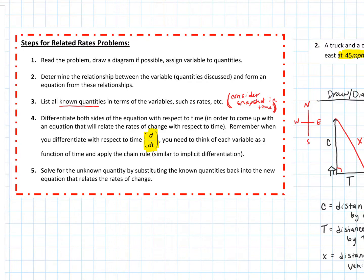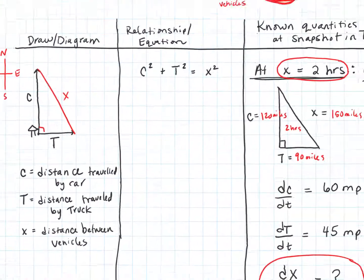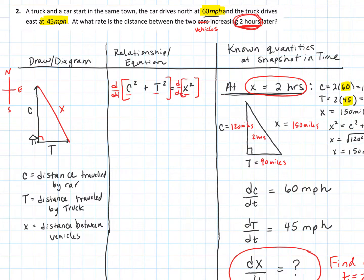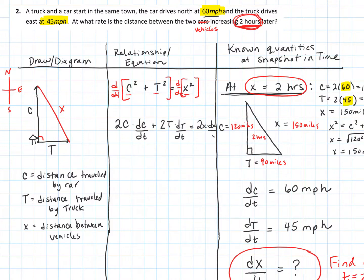Using the chain rule, the derivative of C² gives 2C · dC/dt, the derivative of T² gives 2T · dT/dt (capital T for truck, little t for time), and the right side gives 2X · dX/dt. That is the relationship between the rates — we differentiated the quantity equation to get a rate equation.